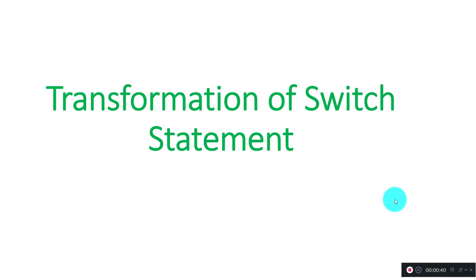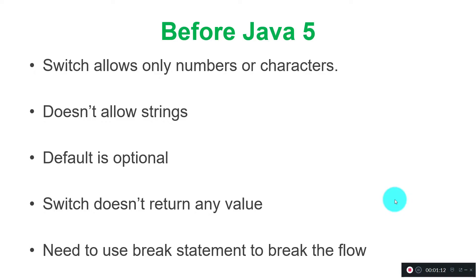Switch statements are imported from C language, so whatever features were available in C related to switch are imported into Java. In Java's initial versions, switch gave very limited features to developers. Before Java 5, it was expecting only numbers and characters — integers specifically. We write a switch statement and keep cases, and after each case performing business logic we keep a break.